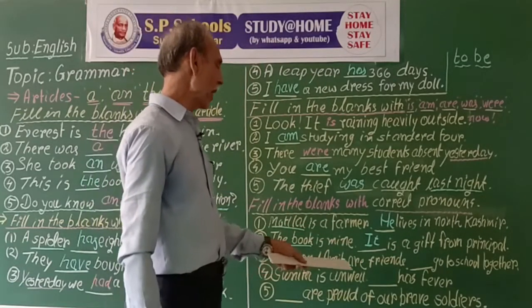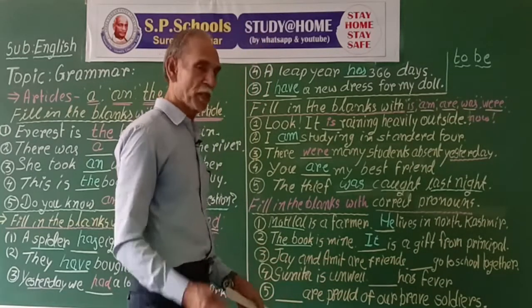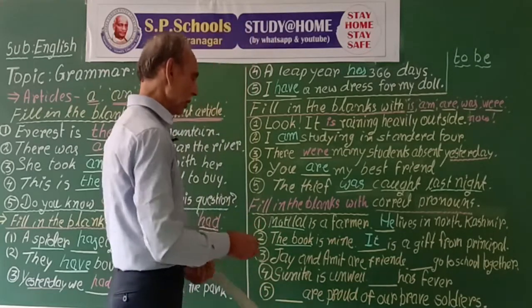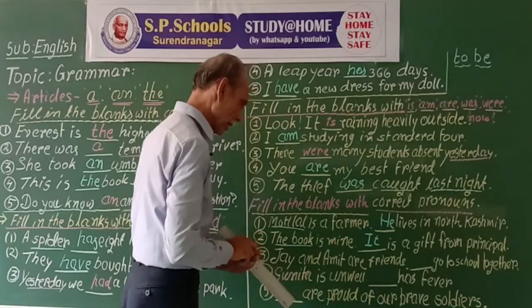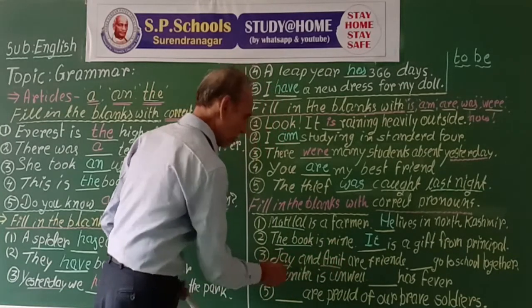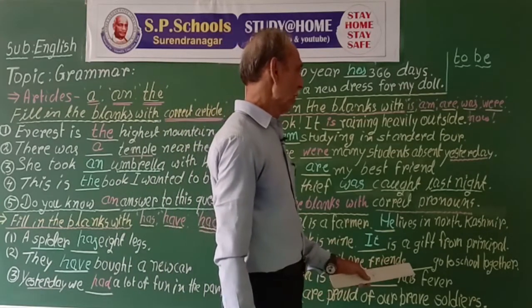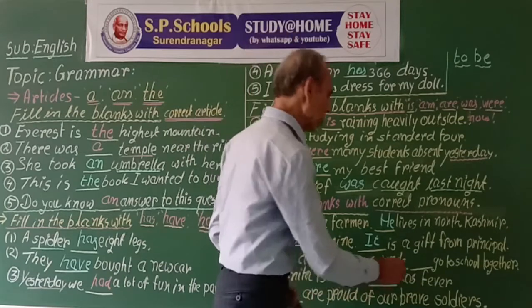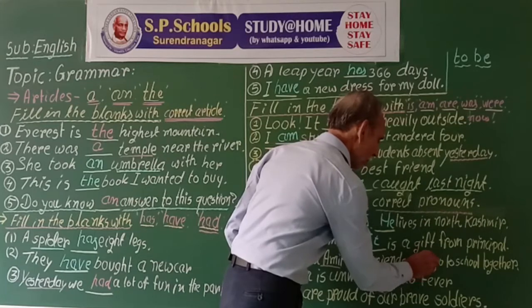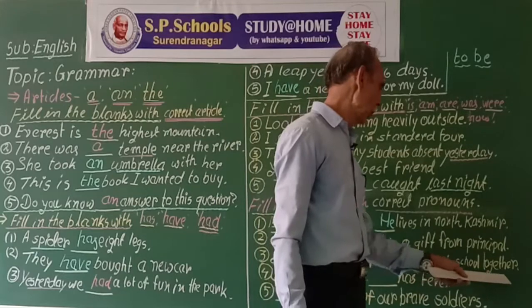Choi and Amit are friends. Choi and Amit — more than one, two names — so we use 'they'. They go to school together.